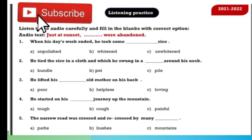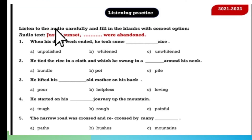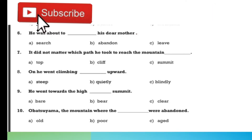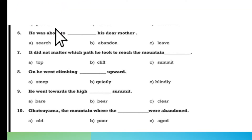Just at sunset, he lifted his helpless old mother on his back and started on his painful journey up the mountain. The road was long and steep. The narrow road was crossed and recrossed by many paths made by the hunters and the woodcutters. At some places they got lost and confused, but he did not think about it. He was about to abandon his dear mother, so it did not matter which path he took to reach the mountain top. On he went, climbing blindly upward, ever upward towards the high bare summit known as Obatsuyama — the mountain where the aged were abandoned.